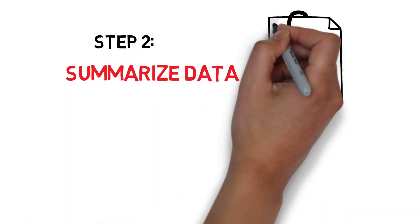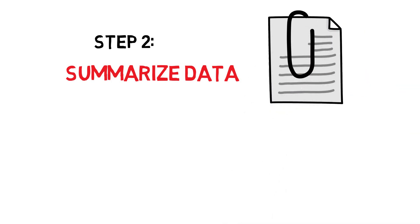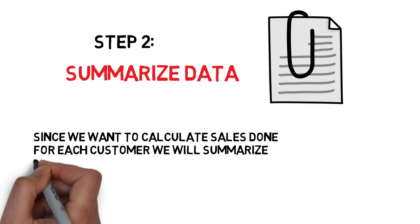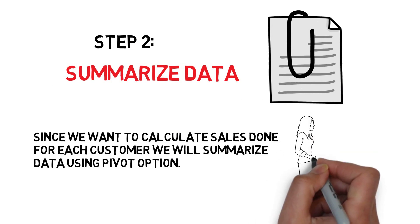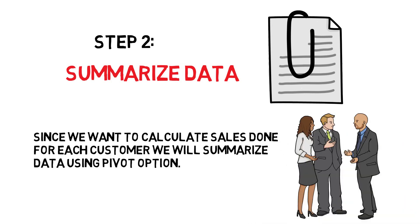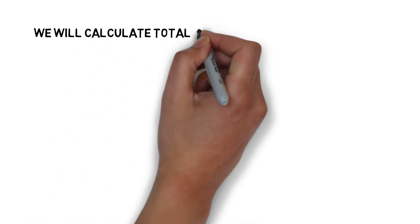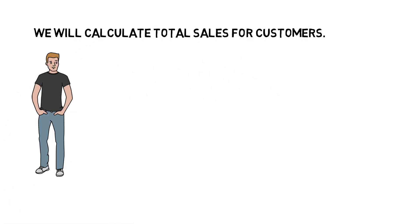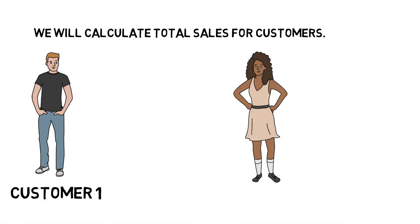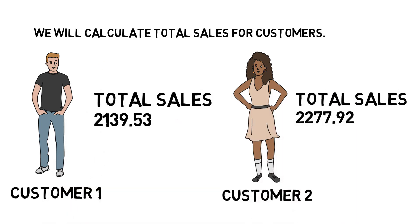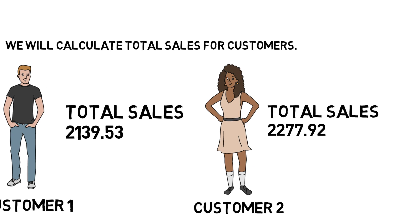Step 2: Summarize data. Since we want to calculate sales done for each customer, we will summarize data using the Pivot option. For example, let there be two customers, Customer 1 and Customer 2, having total sales of 2,139.53 and 2,277.92 respectively.